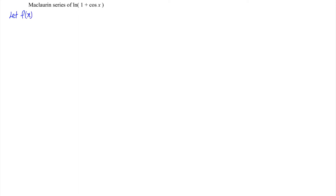We let f(x) be equal to ln(1 + cos x). At the point x equal to 0, f(0) is equal to ln(1 + cos 0), which is 1 plus 1. Since cos 0 is equal to 1, we have ln(1 + 1), which is ln(2).